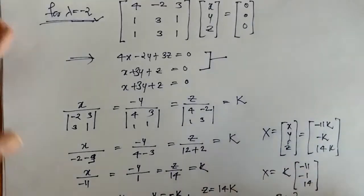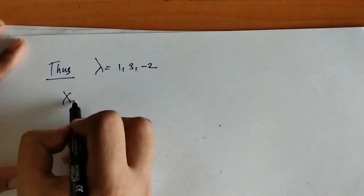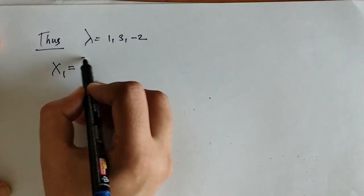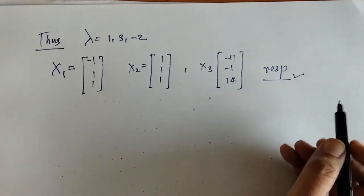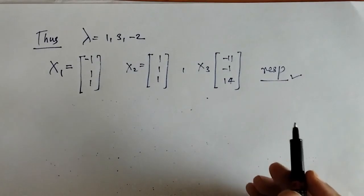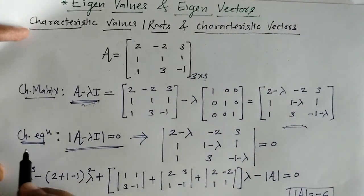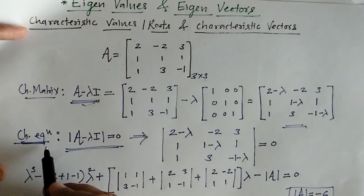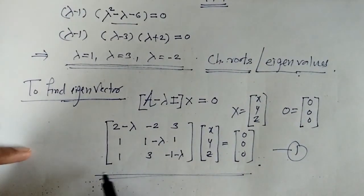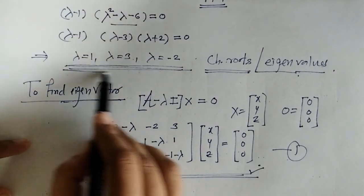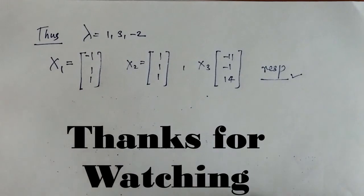Thus, we have found all three eigenvalues and their corresponding three eigenvectors. To summarize: first find the characteristic equation to get the eigenvalues, then substitute each eigenvalue into the matrix equation to find the required eigenvectors. This is the complete procedure for finding eigenvalues and eigenvectors. Thank you.